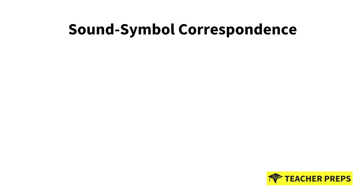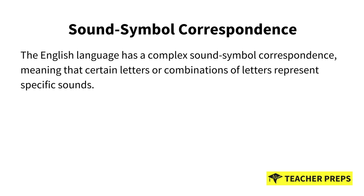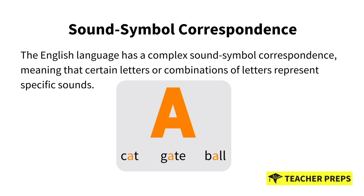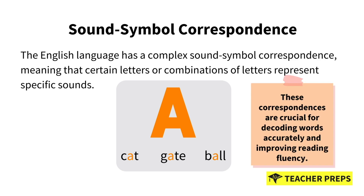Our next test prep section that you'll need to know for your exam is all about sound-symbol correspondence. The English language has a complex sound-symbol correspondence, meaning that certain letters or combinations of letters represent specific sounds. For example, the letter A can represent different sounds in words like 'cat,' 'gate,' and 'ball.' These correspondences are crucial for decoding words accurately and improving reading fluency.